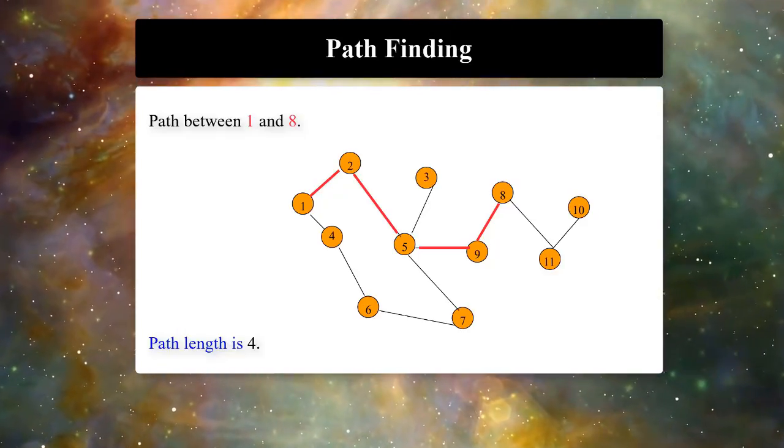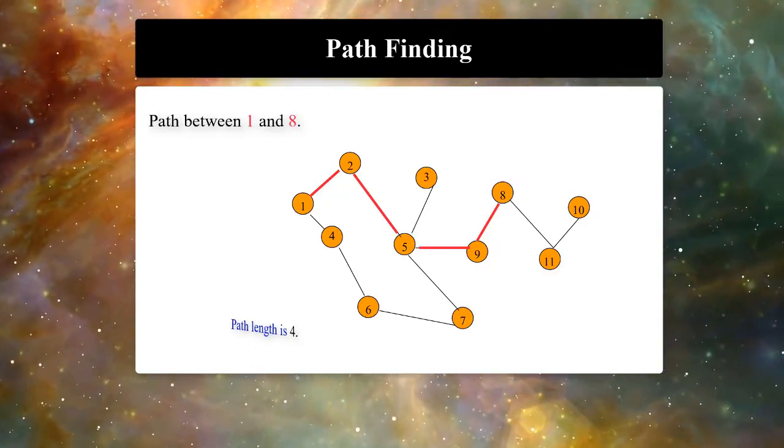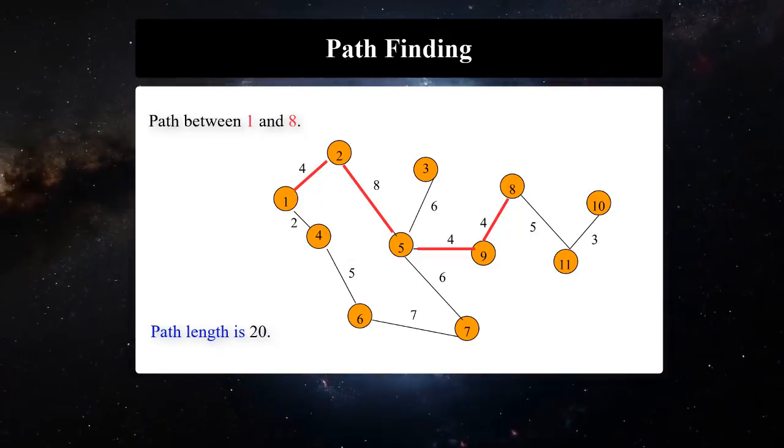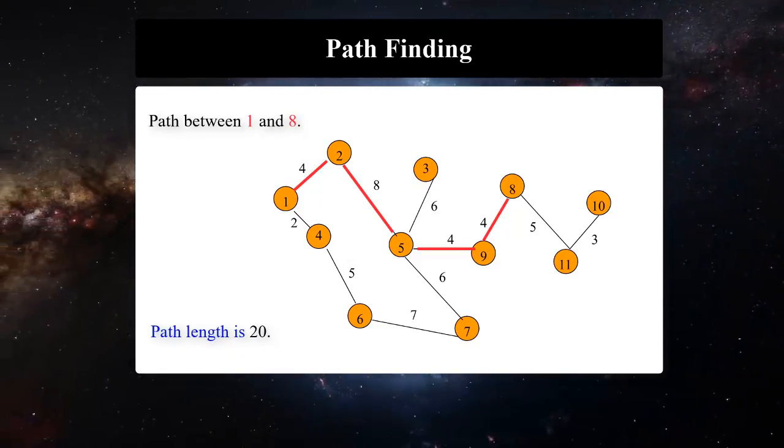For example, in this graph we have a path from 1 to 8 with length of 4. Here is the same path, but in an unweighted graph and length is 20.